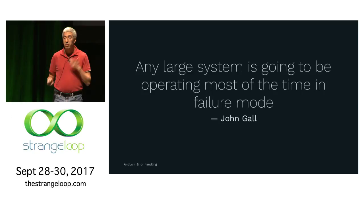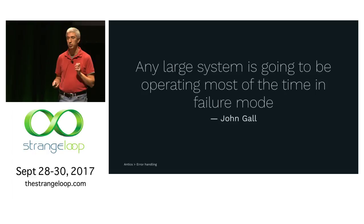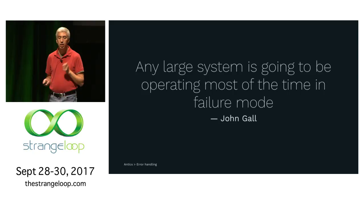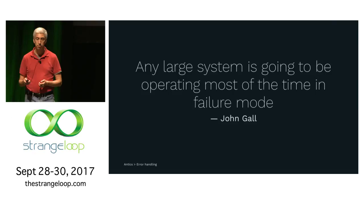Let's talk about error handling. When we build distributed systems, most of the time something is going to be going wrong if the system is large enough or runs for a long enough period of time. The network has all sorts of transient problems — switches and routers get congested, packets get dropped, things time out. Disks go bad, whole servers go bad. We need to be able to handle errors that happen in our system because they're happening all the time.